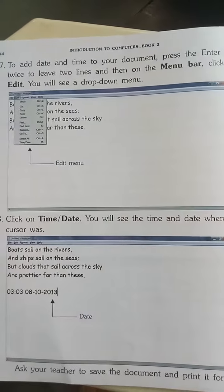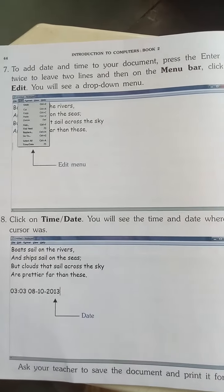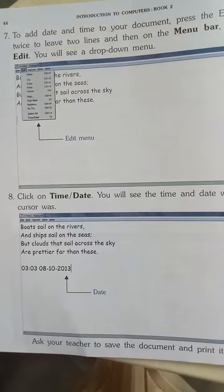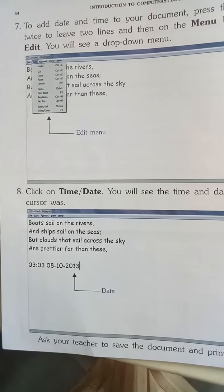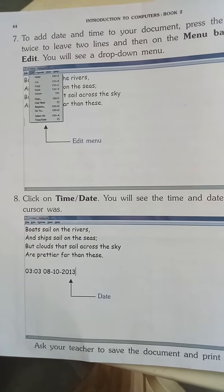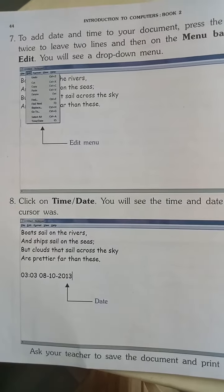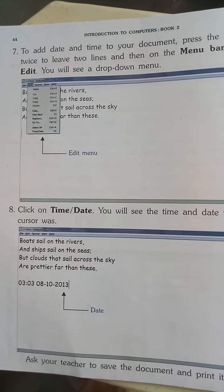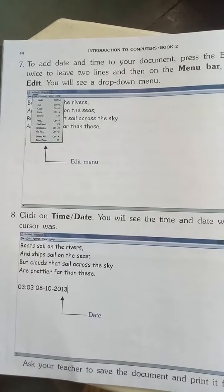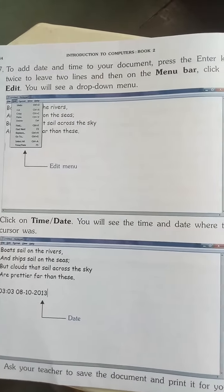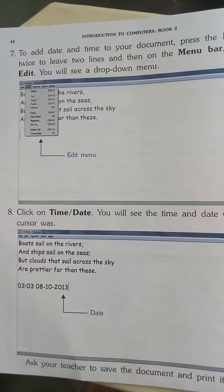Dekho, last period me aap logo ne type ki hogi — paragraph ya poem type ki, har line ki. Phir uske niche aapko date or time insert karni hai. Do line chhodne ke liye two times Enter key ko press karenge, to two lines chute go. Phir aapko menu bar me Edit menu ke oopar mouse ka left button se click karna hai.